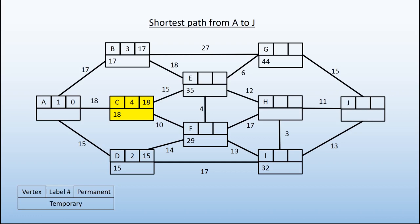C is connected to E. We can get there though in 33. This replaces the temporary label that we had at E. Yes, we could get there in 35 by going from A to B to E, but we now know we can get there in a shorter distance, so we replace the temporary label of 35 with 33.